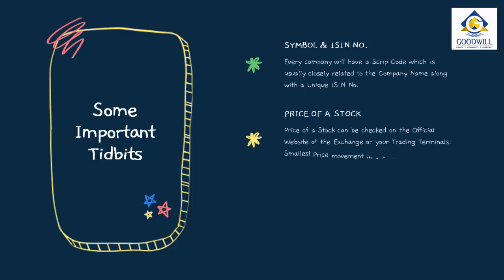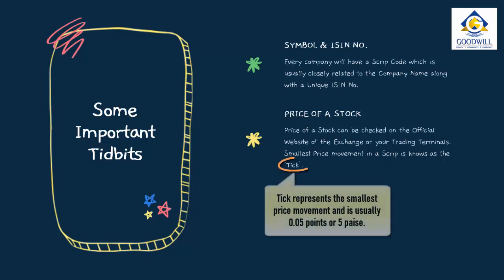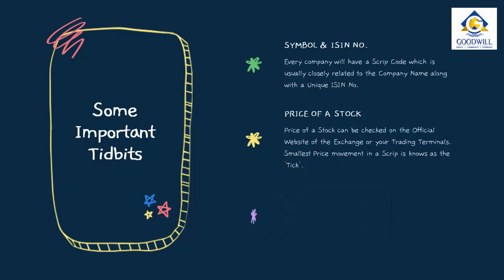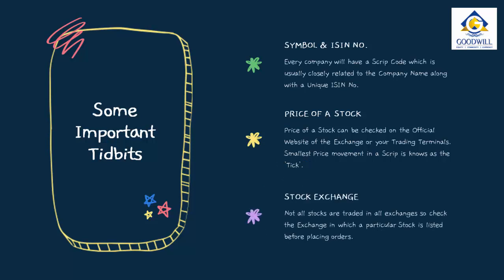Next, the price of a stock may be checked on the official website of the exchanges or on your trading terminals provided by Goodwill as well as other brokers. An important point to remember is that the smallest price movement in a particular script is known as the tick of that script, which is usually 0.05 or 5 paise. Lastly, not all stocks are listed at all stock exchanges — for example, a script may be listed in NSE but not in BSE and vice versa. So please make sure to check the stock exchanges in which they are listed.